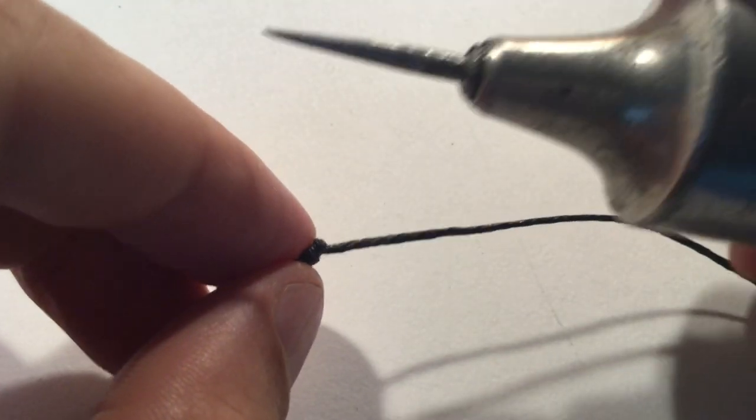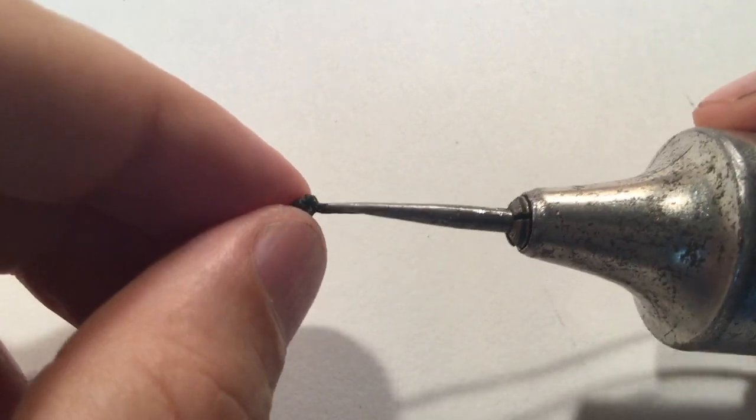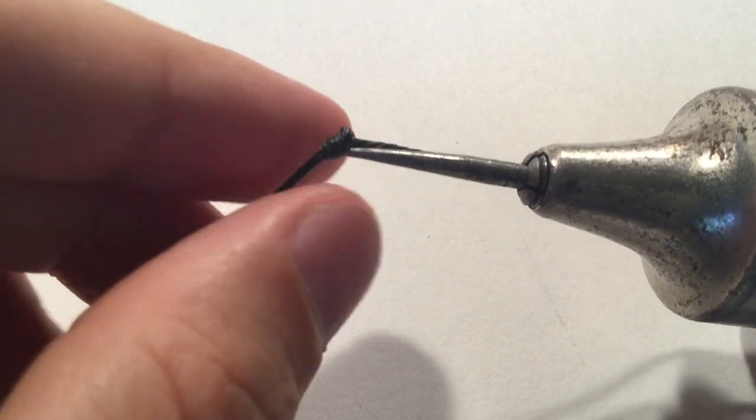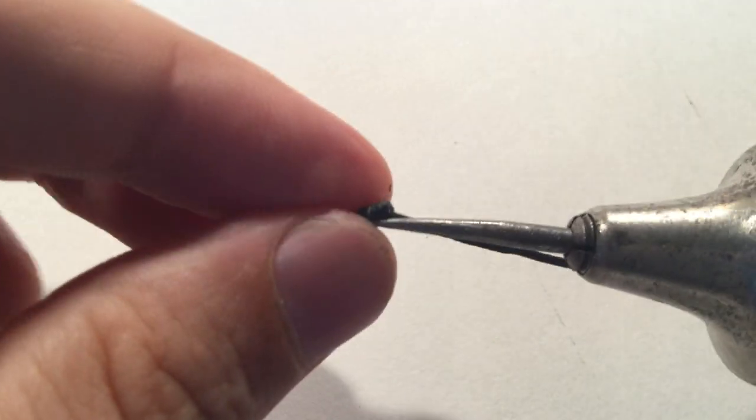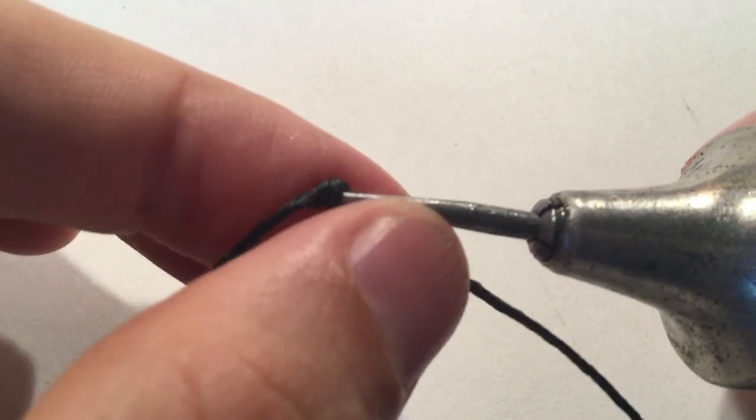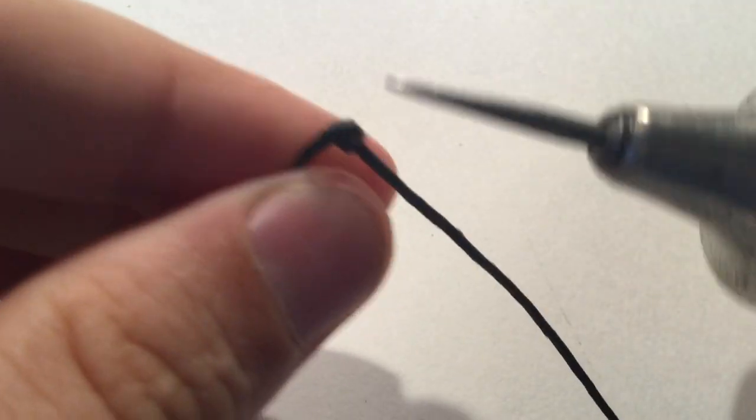So what I did was I switched to this tool, which is just an awl, and any tapered point would do. If you had a dental pick, that would be fine, but generally you just need a point that allows you to get inside your threaded portion just enough to pull the loop loose. It's hard to find the right balance.